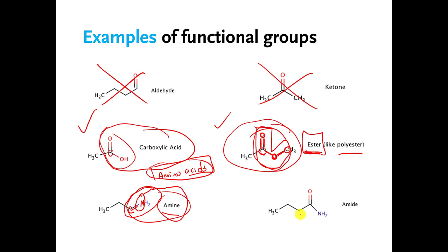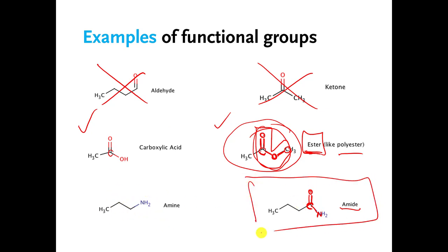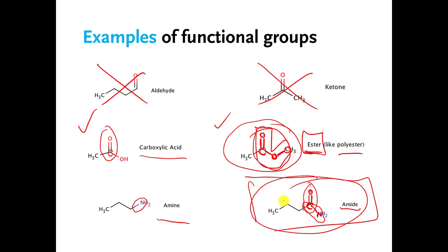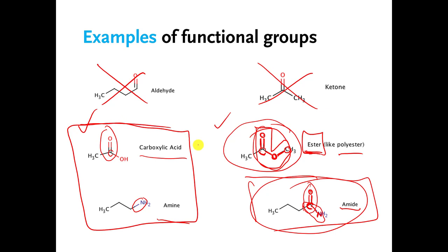The last one I want you to know: if you have a carbon double bonded to an O and single bonded to a nitrogen, this pattern is called an amide functional group. The amide functional group looks like a cross between the carboxylic acid and the amine — it has a bit that looks like part of the carboxylic acid and a bit that looks like part of the amine. A lot of times, amide functional groups are made using a special chemical reaction that combines these two things, but we won't talk about that until the very last lecture.